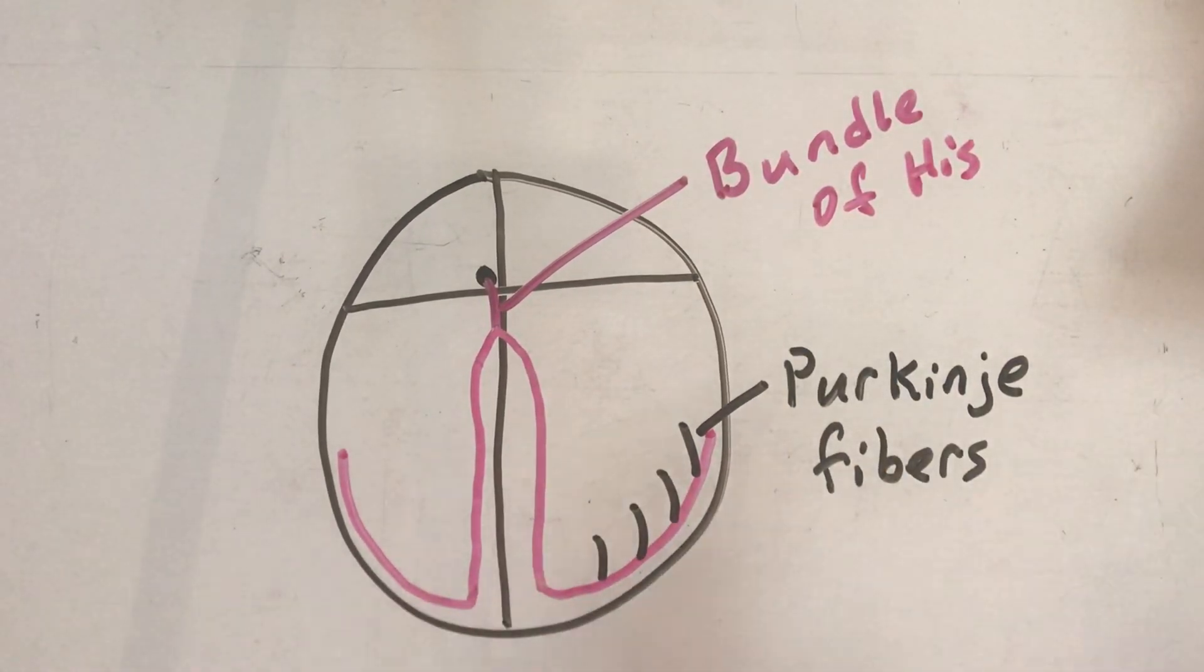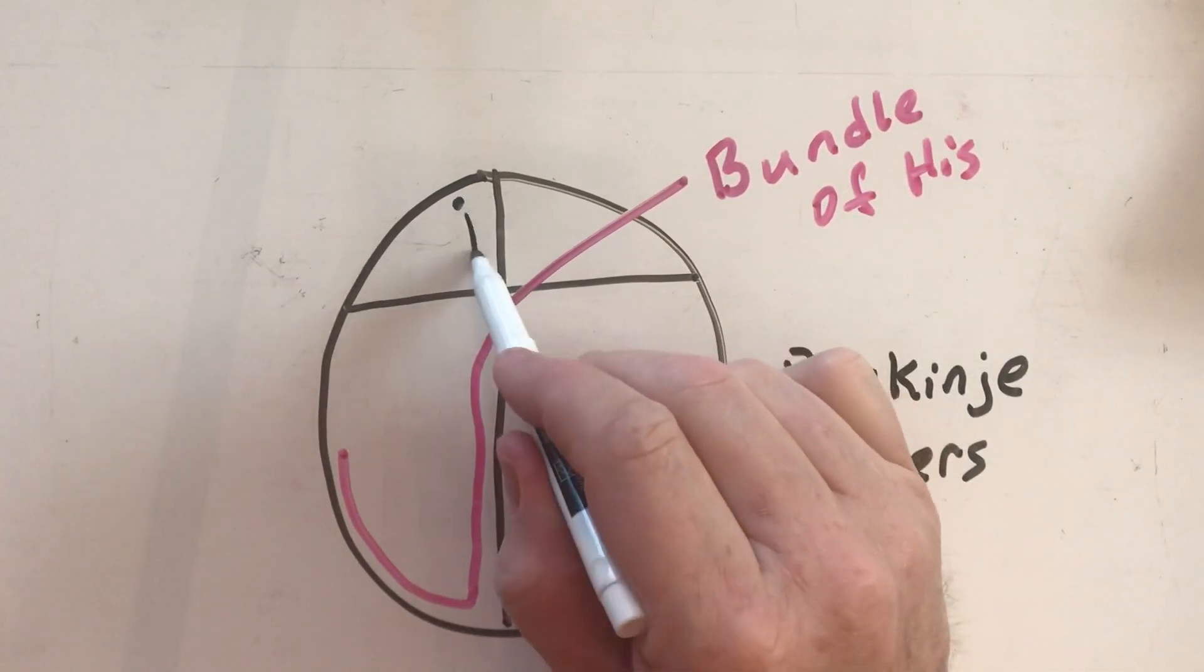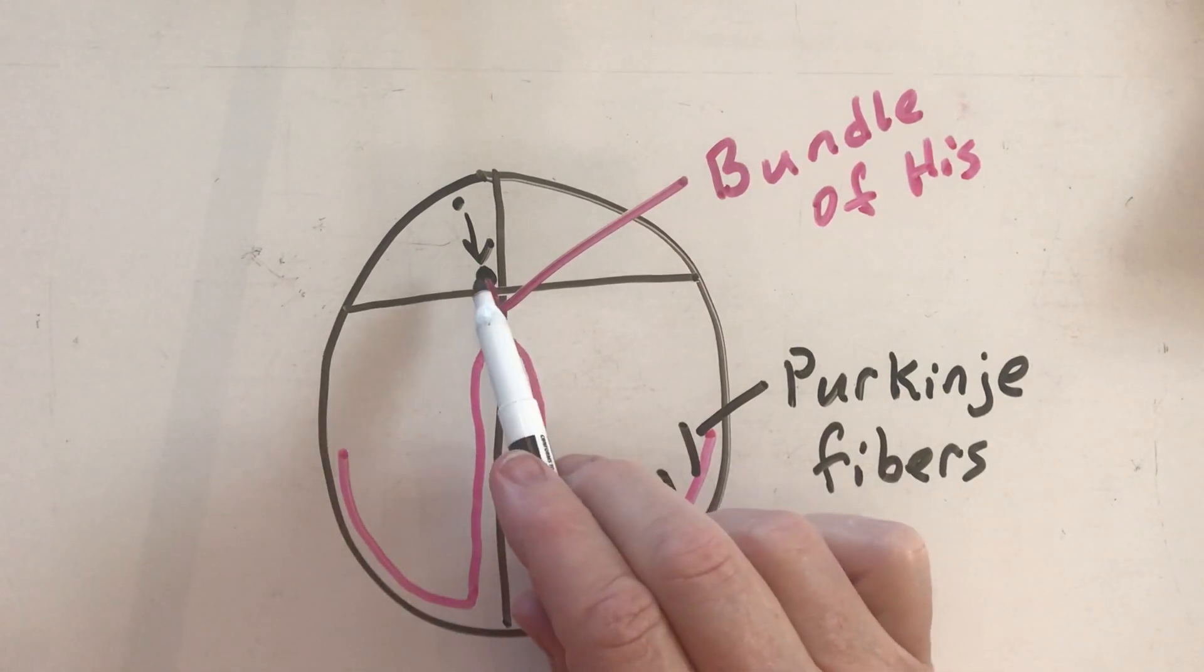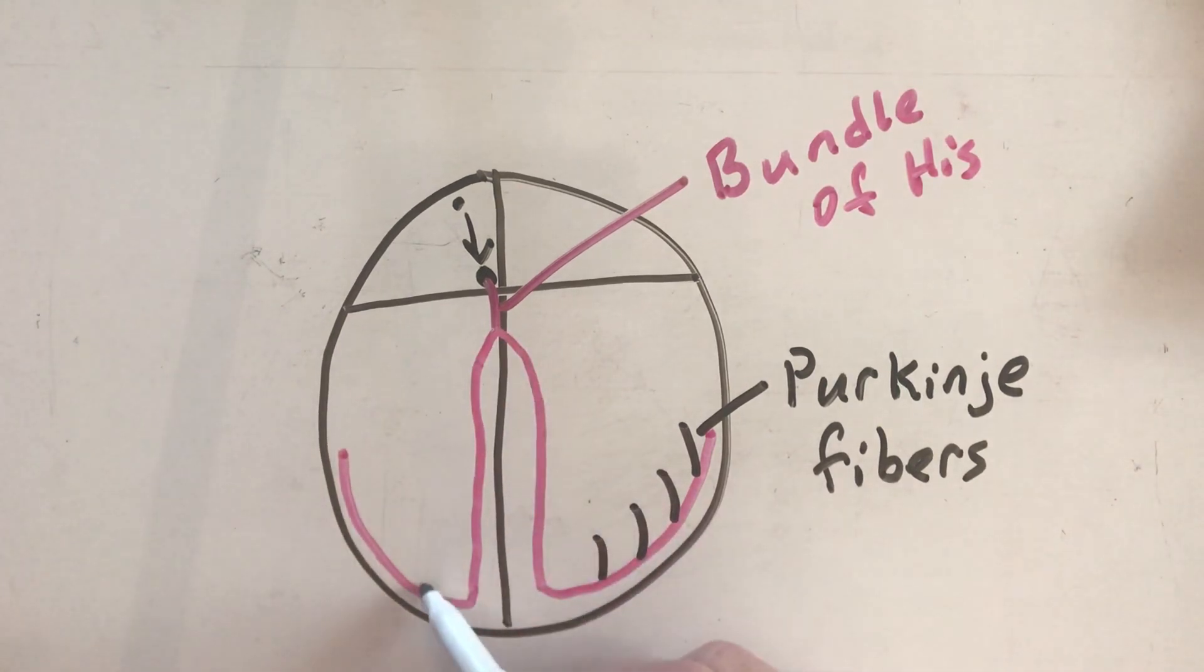To the AV node. And then at the AV node it's going to be held up for about a hundredth of a second. Then it's going to go into the bundle of His, and then it's going to go into the right and left bundle of His, and then down to Purkinje fibers where it will cause the ventricles to contract.